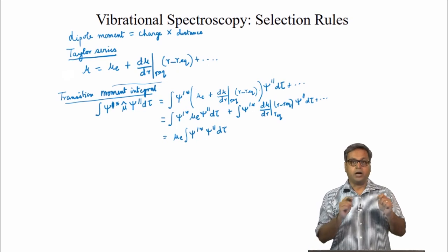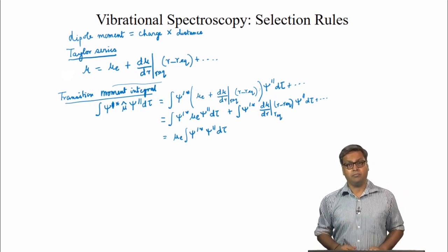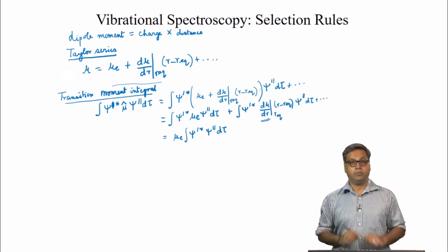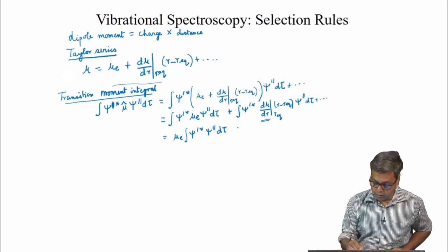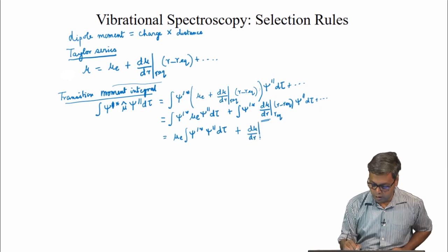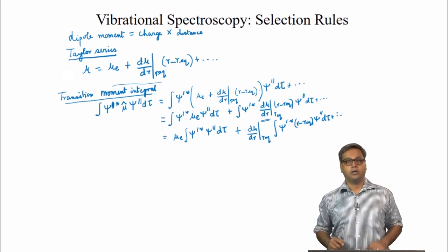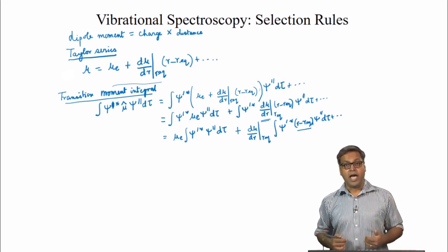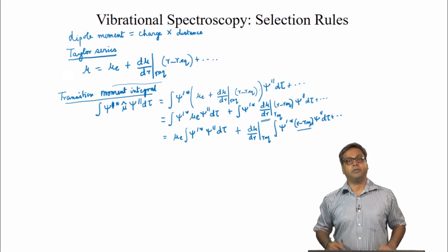We can take out μ_E because it does not affect the wave function. Similarly, the gradient of the dipole moment (dμ/dr) at r_equilibrium is also a constant and can be taken out of the second integral. The displacement term (r − r_eq) however cannot be taken out of the integral, as the wave functions themselves are functions of displacement, so the integral is also a function of displacement.